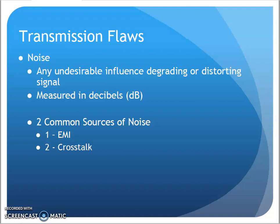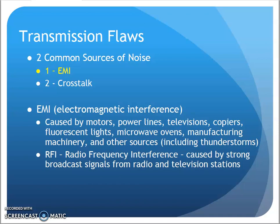As I'm sending data, there is always the possibility of a transmission flaw caused by noise. Noise, by definition, is any undesirable influence degrading or distorting our signal, typically measured in decibels (dB). Common sources of noise are EMI or crosstalk. EMI stands for electromagnetic interference — interference caused by things consuming electrical power, such as motors, power lines, televisions, photocopiers, elevators kicking on. Anything using electrical power can potentially cause electromagnetic interference from the magnetic fields produced.